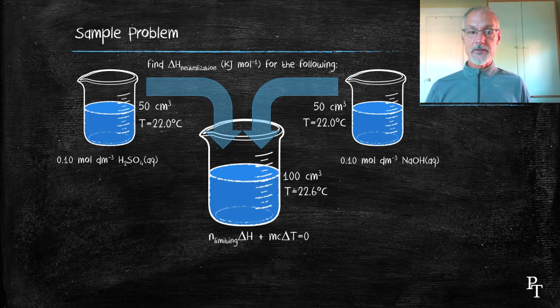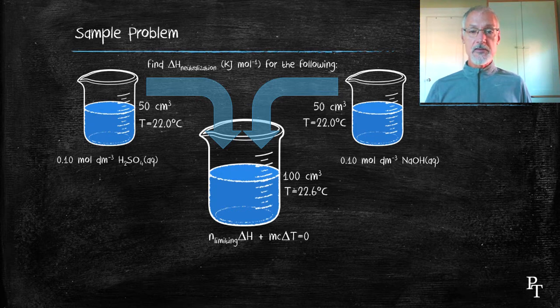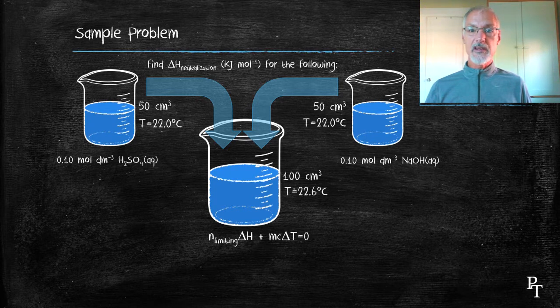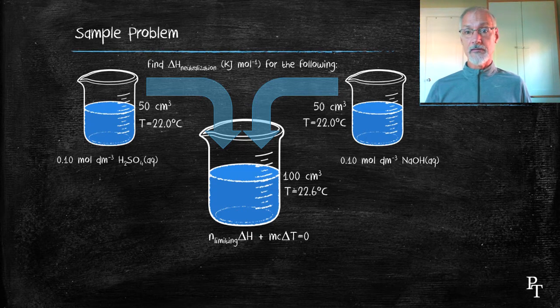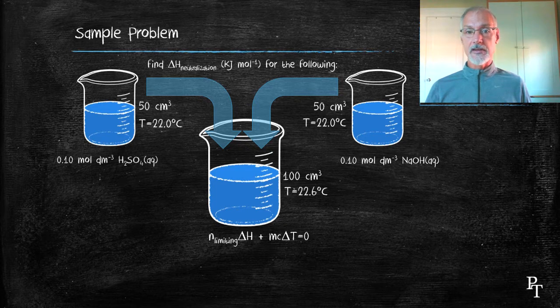Here's my governing equation to determine the enthalpy change. And the first thing I'd like you to notice here is that the number of moles deals with the limiting chemical. I can get the number of moles of sulfuric acid, I can get the number of moles of sodium hydroxide. Which one of these is the limiting chemical?